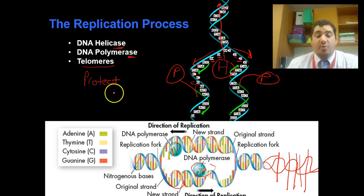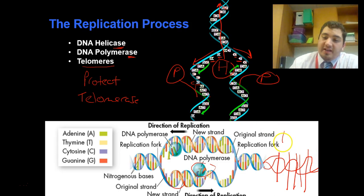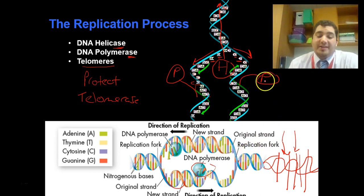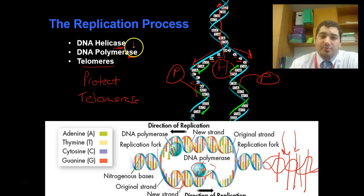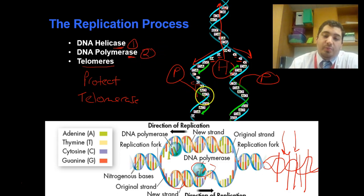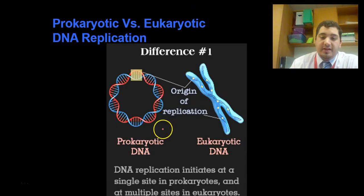As a cell divides more and more and you keep losing telomere sections, the last enzyme — telomerase — comes in and actually adds sections of DNA back into the telomeres to protect the important information. So to summarize, replication during the S phase has three steps: helicase comes in first and unwinds the DNA; then polymerase creates the duplicate complementary strand, going from one strand to two; finally, telomerase adds telomeres to the ends, protecting all the important DNA in the middle.